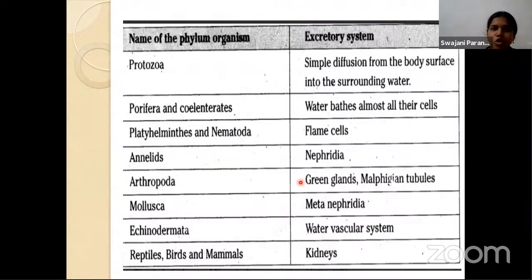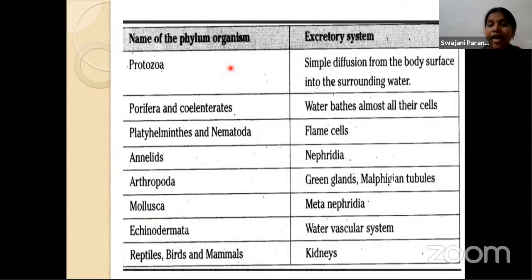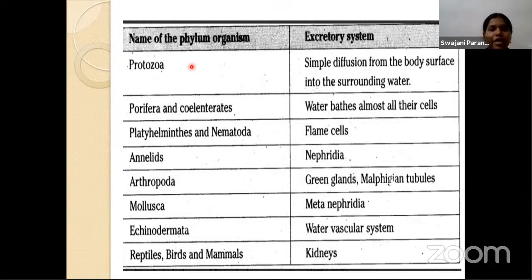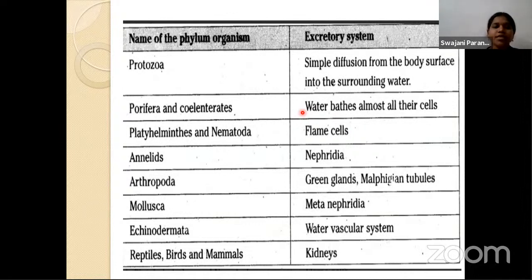The excretory system differs for different organisms — this is the evolution of the excretory system. In single-celled organisms, excretion also takes place because waste must not remain inside the cell. Protozoa use simple diffusion from the body surface into surrounding water. Porifera and coelenterates have almost all their cells in contact with water through body walls, so they excrete directly.